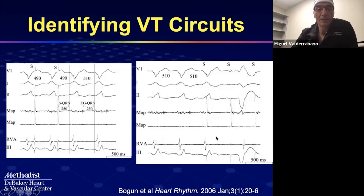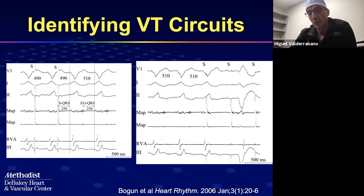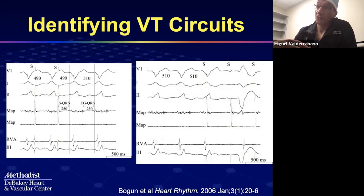When you are in the diastolic component, you see a signal in between QRSs. When you pace it, you may create local capture of that portion of myocardium — you don't see a QRS after the pacing spike. That pacing spike brings the signal earlier, making that portion of scar tissue refractory. It's no longer available for the tachycardia circuit and you terminate the tachycardia. That's one of the things we like to see.